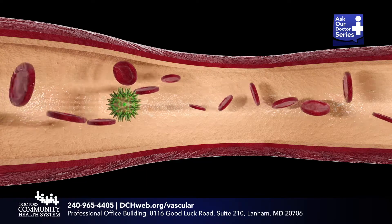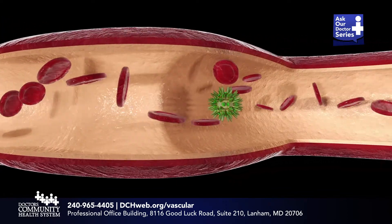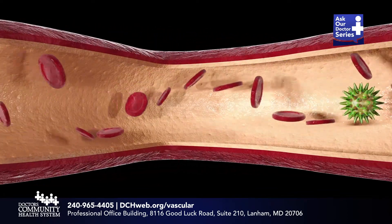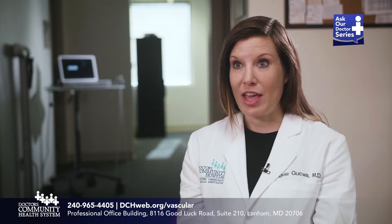Most people have heard of the circulatory system in grade school. It's basically a collection of vessels that carry blood and lymph all over the body to deliver oxygen and nutrients. Vascular disease is basically any condition that affects the blood vessels — this includes both the arteries, the veins, and the lymphatic vessels.